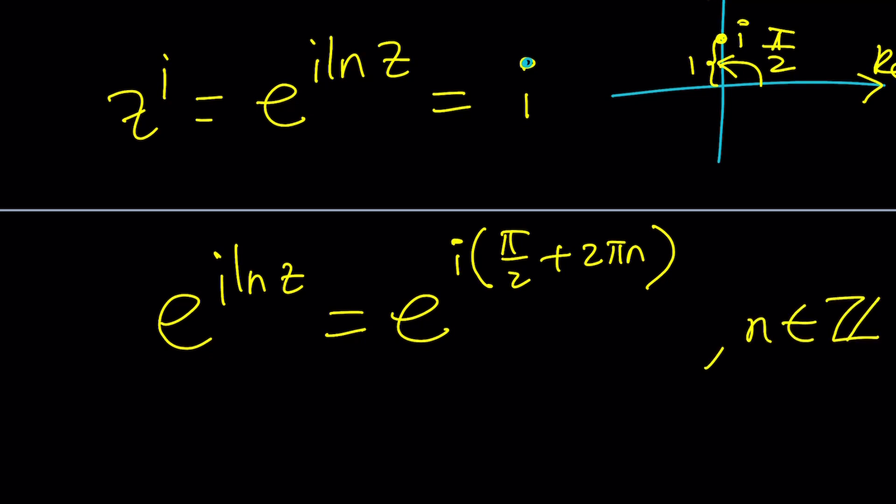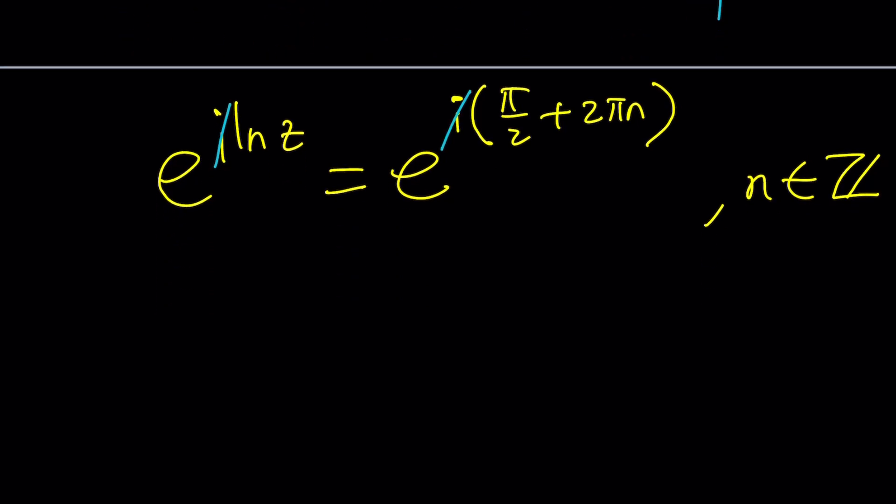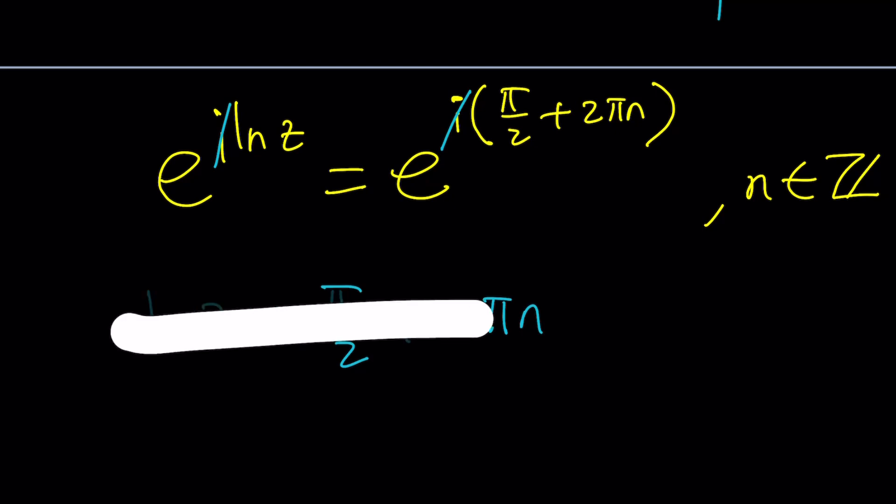Let's go ahead and cancel something out like i. We can do that. And since we have e on both sides we can basically natural log and then we're going to get the following. ln z equals pi over 2 plus 2 pi n.